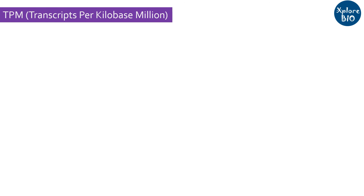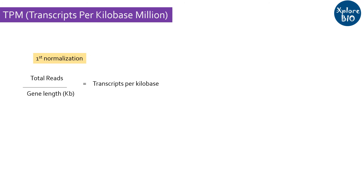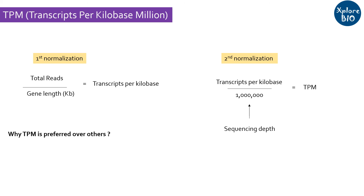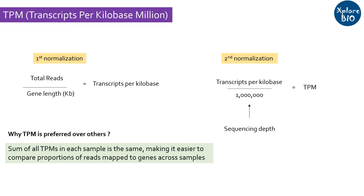Another important read normalization method that is becoming more popular is TPM, which stands for transcripts per kilobase million. Unlike RPKM and FPKM, which normalize the data first based on sequencing depth, TPM normalizes first by gene length and then by sequencing depth. The major advantage of TPM is that it facilitates direct comparison of the proportion of reads mapped to a gene across samples. TPM is preferred for its consistent normalization and ease of sample comparison.